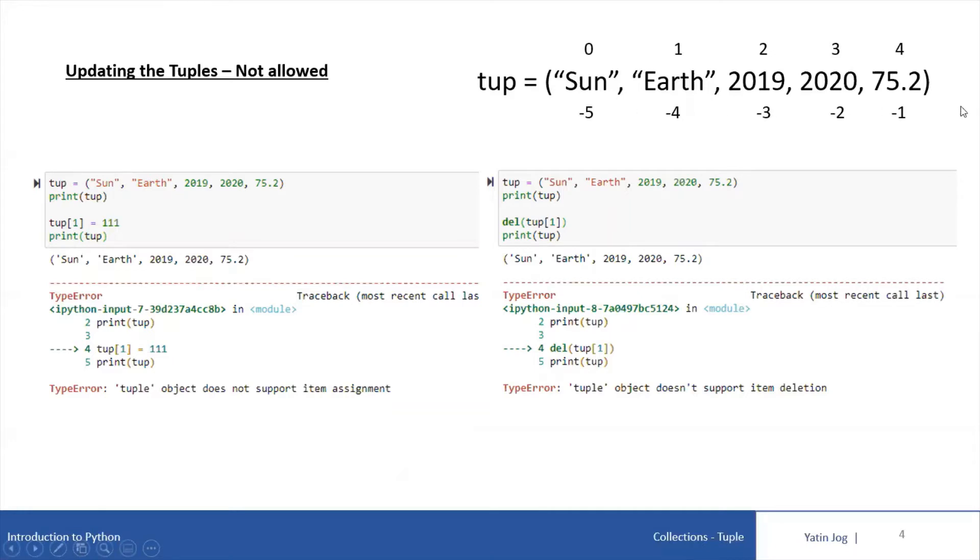So I am using the same tuple with 5 elements: 2 string elements, 2 integer elements and 1 float element. If I print the tuple, it will print the tuple elements on this screen.